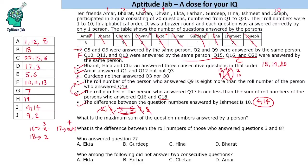With all values filled, we can now answer the specific questions. The maximum sum of question numbers answered by any person: Farhan answered 10, 11, 13 which sums to 34 — wait, actually checking Charan: 15+16+20 = 51... so 35+16 = 51. The maximum sum is 51. The difference between the roll numbers of those who answered questions 3 and 8: question 3 was answered by Dhvani (roll 4) and question 8 by Amar (roll 1), so the difference is 3.